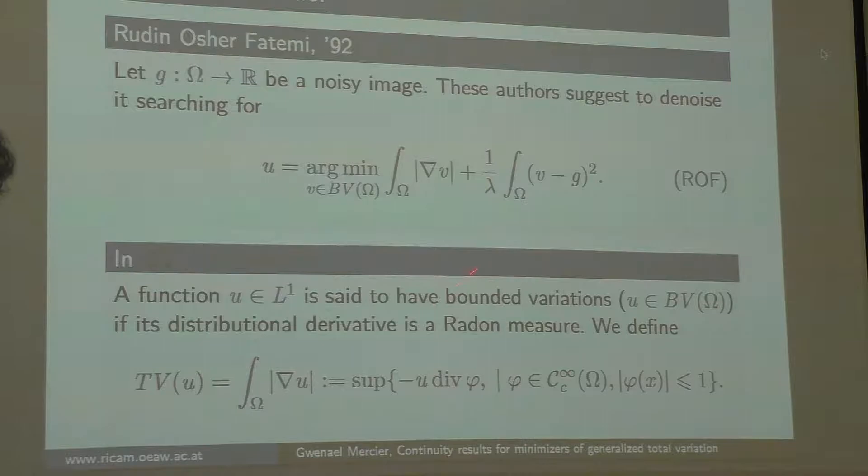The reason for putting here a 1 and not a 2—first you could think, I will put a 2 because it's extremely simple for the analysis, but if you do that, then you solve the heat equation and you destroy all the edges of the image. The solution will be C infinity, and in an image what you are interested in is the edges. So you want u to be able to have discontinuities. It's a very key point here.